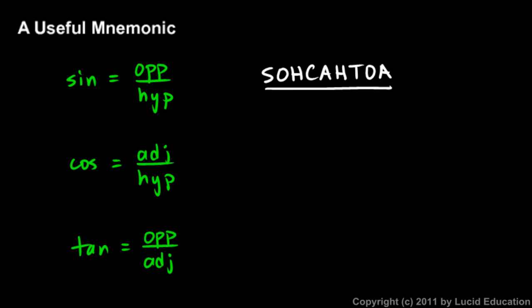And I get a lot of my students, they'll get a test on trigonometry or a test that uses these ideas, and the first thing they do is write this down at the top of the test. And then they can refer back to this when they need to remember that sine is opposite over hypotenuse.